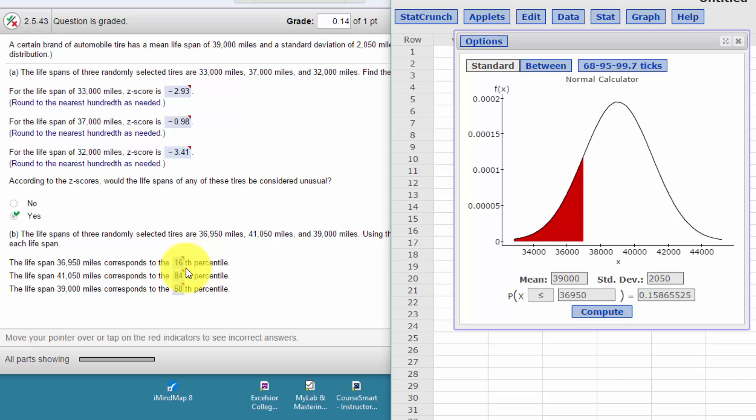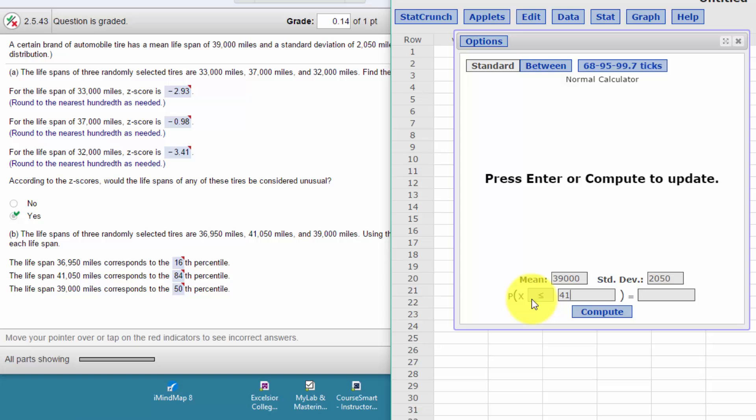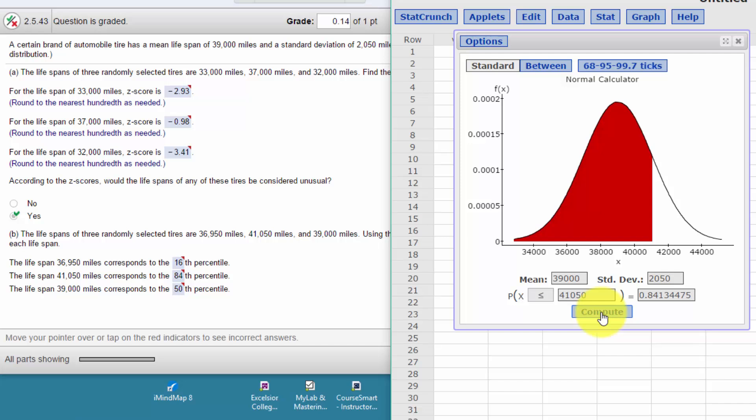And that matches what they have here. I'll just go ahead and put in the 41,050, click Compute, and we've got 84%—is to the left of that value.